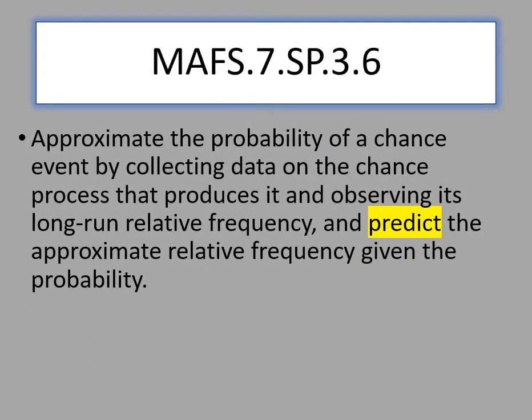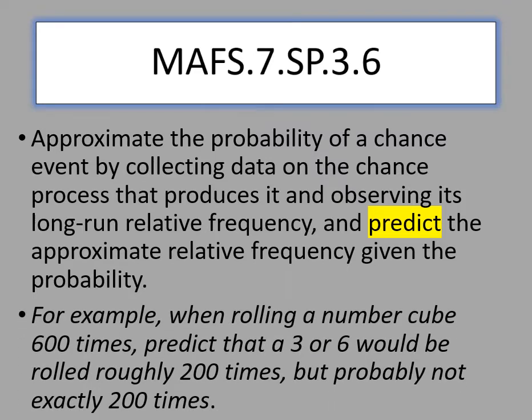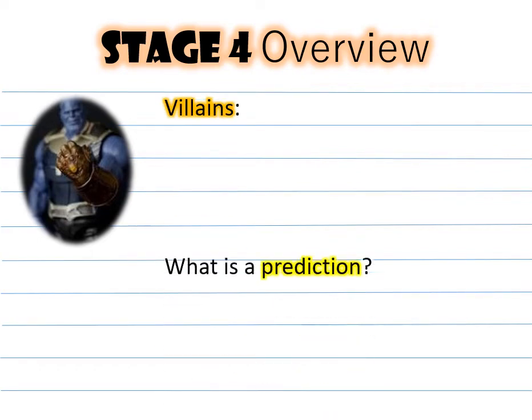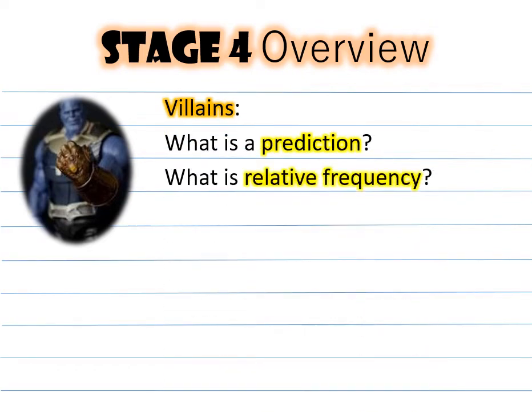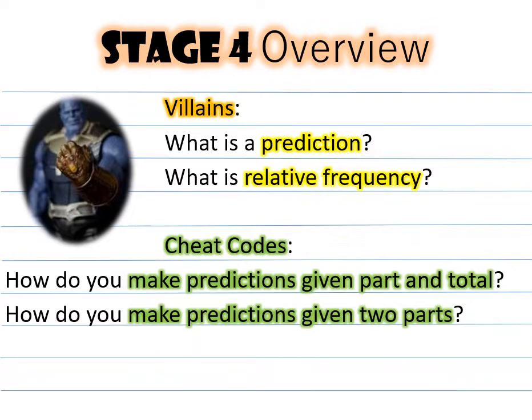Our state standard says to approximate the probability of a chance event by collecting data of the chance process that produces it and observing its long-run relative frequency, and predict the approximate relative frequency given the probability. We will look at the words 'predict' and 'relative frequency' in today's video. For the stage 4 overview: what is a prediction and what is relative frequency? And for the cheat codes: how do you write probability given part and total?